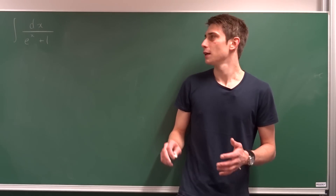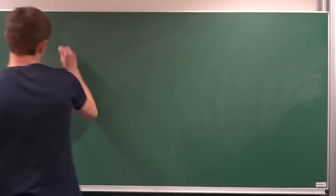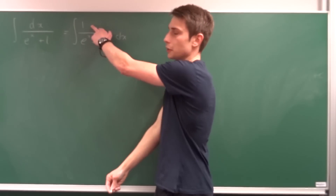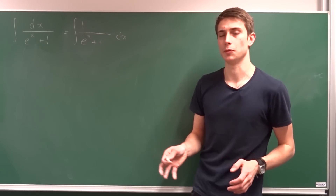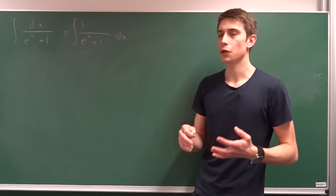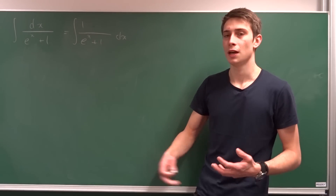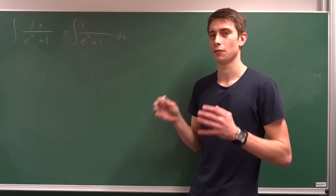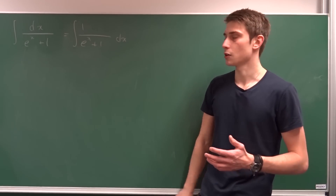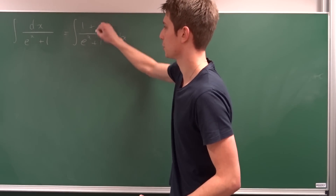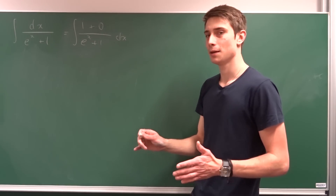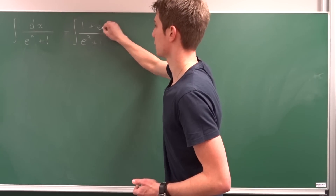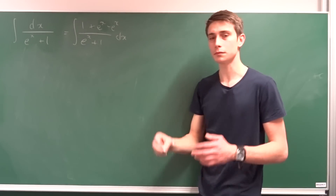The third method isn't quite obvious. We write the integral of 1 over e to the x plus 1 dx and use algebraic manipulation. The key idea is to add zero in the numerator — specifically 1 plus e to the x minus e to the x — which doesn't change anything but helps things cancel out later.